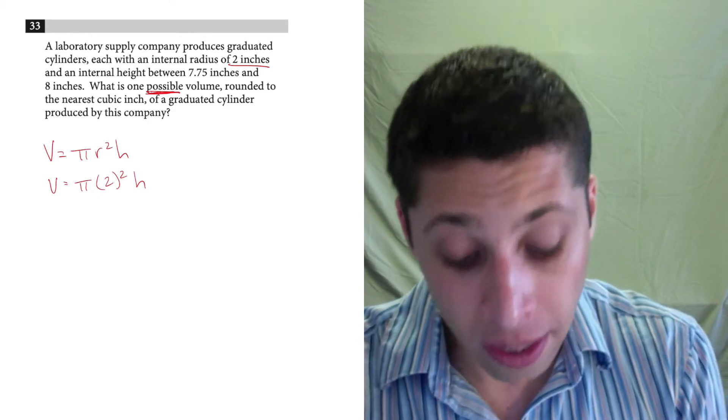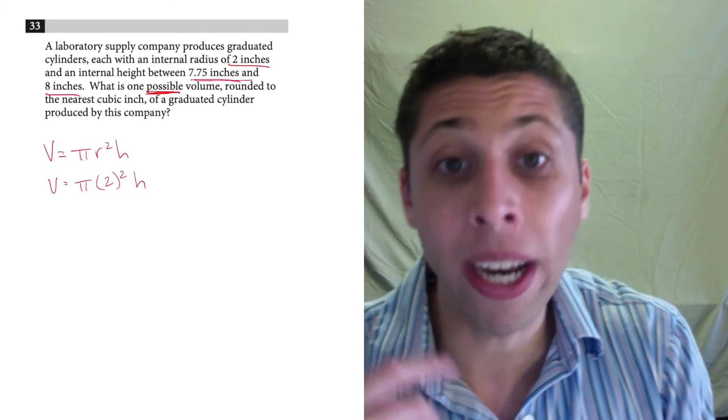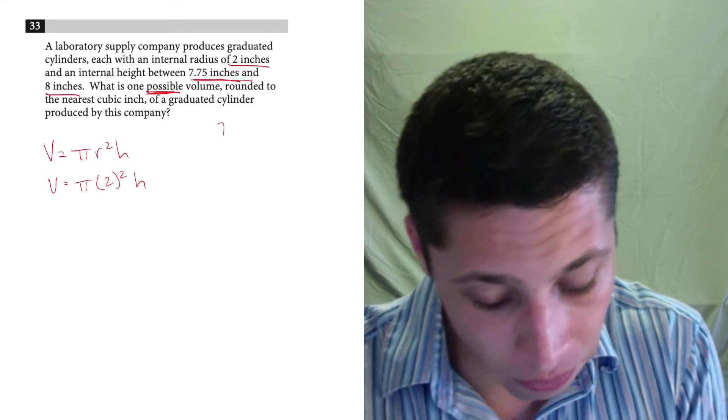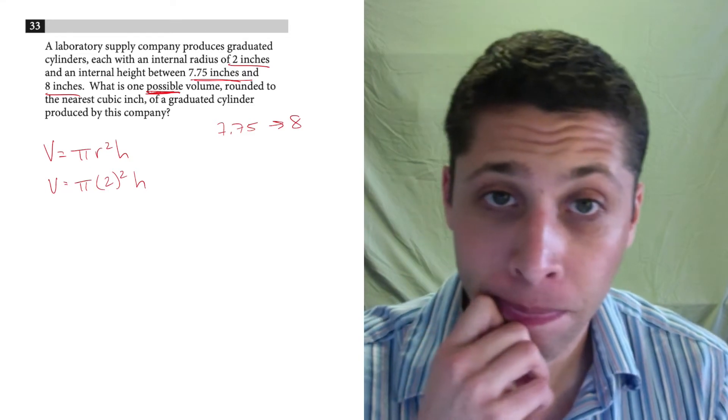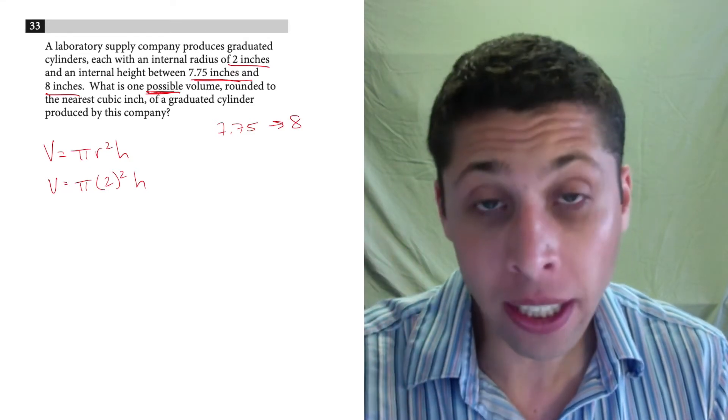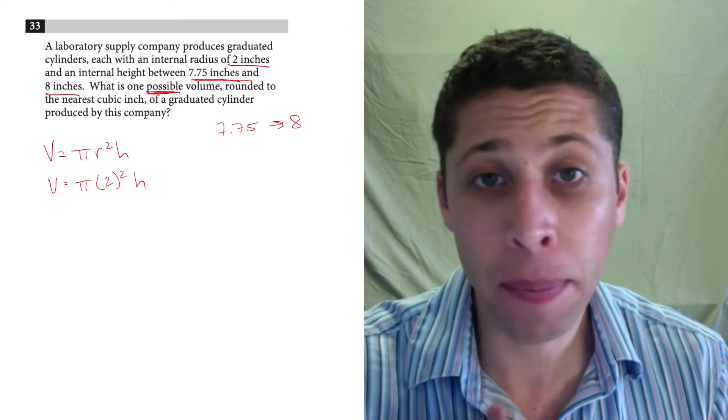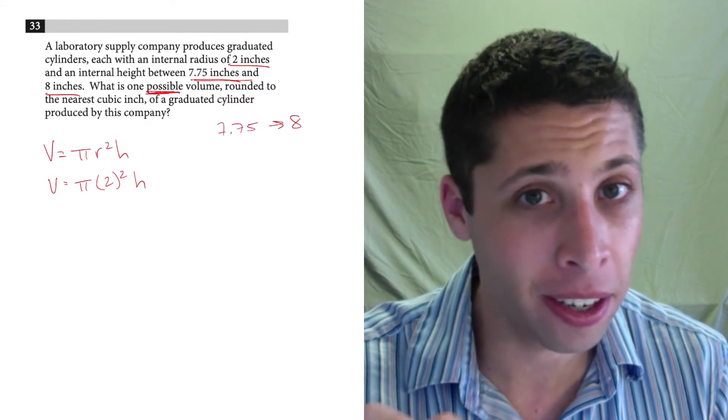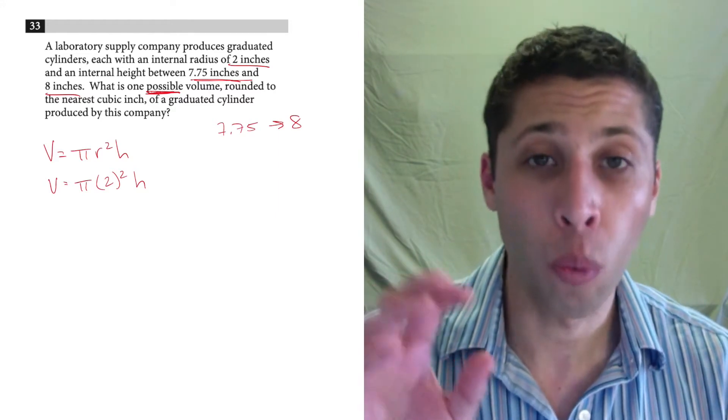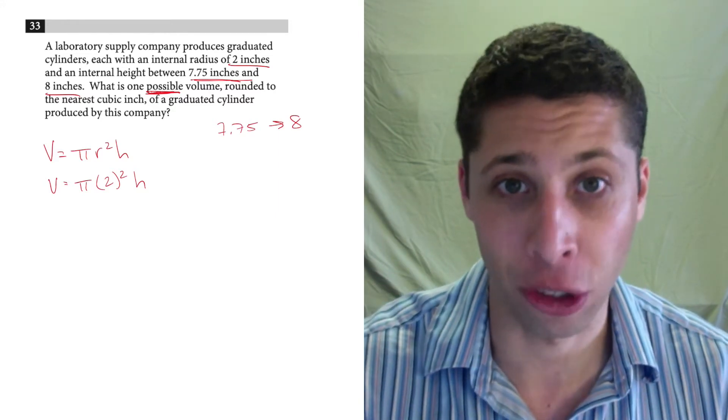So in this case, they don't give us a height. They give us a range of heights, 7.75 to 8 inches for the height. We're going to need to pick something. And I might pick something different than you picked and we're going to get different answers, but the point is there are multiple possible answers because we just need to pull the trigger and make a choice.